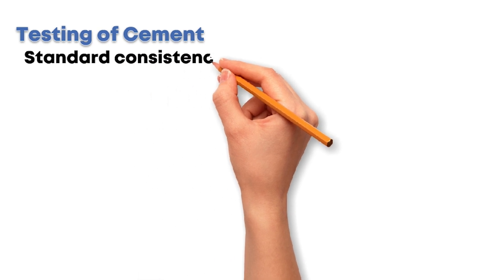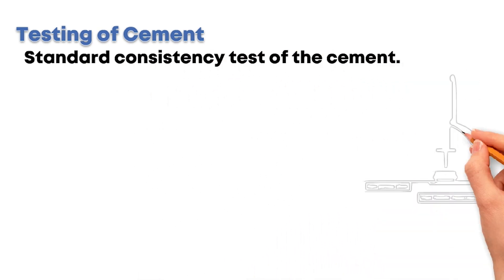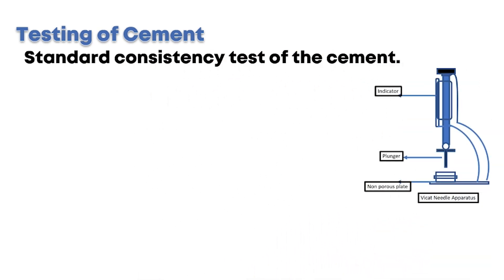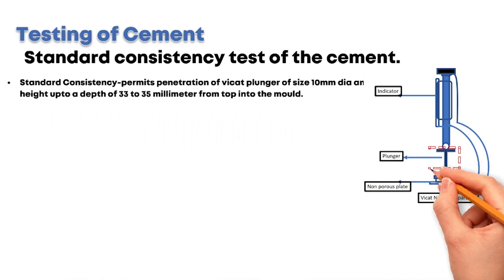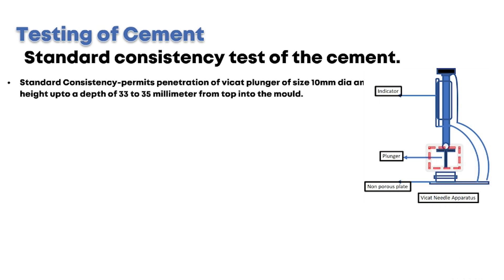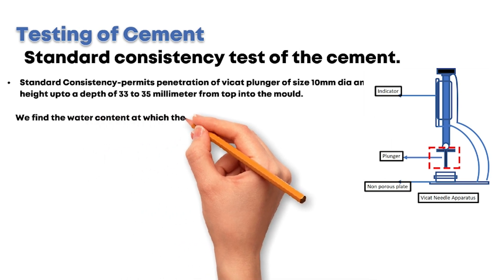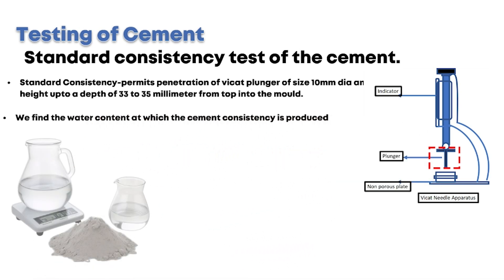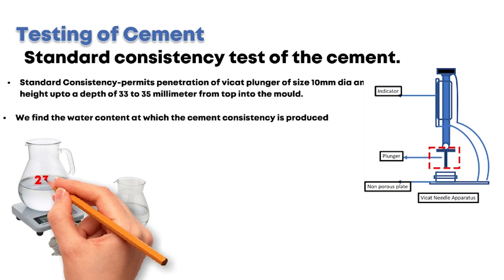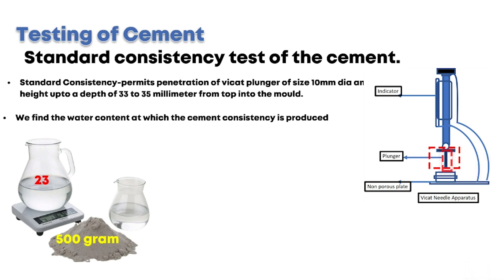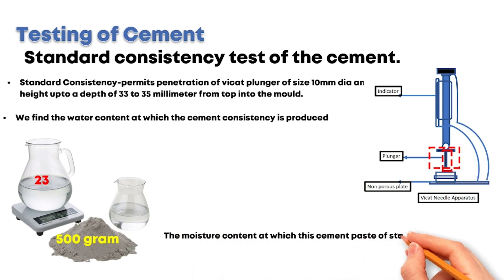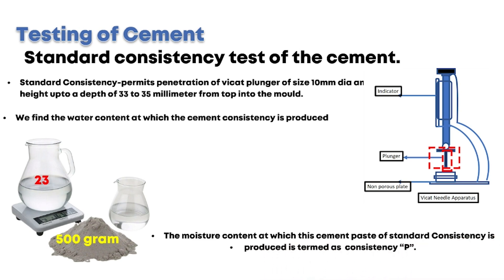Let's discuss the standard consistency test of the cement. Standard consistency should be known before we determine soundness. Standard consistency permits penetration of the Vicat plunger of size 10 mm diameter and 50 mm height up to a depth of 33 to 35 mm from the top into the mold. We find the water content at which the cement consistency is produced. Take 500g of cement and add 23% of water by weight of cement in the first trial. Lower the plunger gently up to the surface of the mold and release quickly. The moisture content at which this cement paste of standard consistency is produced is termed as consistency P.